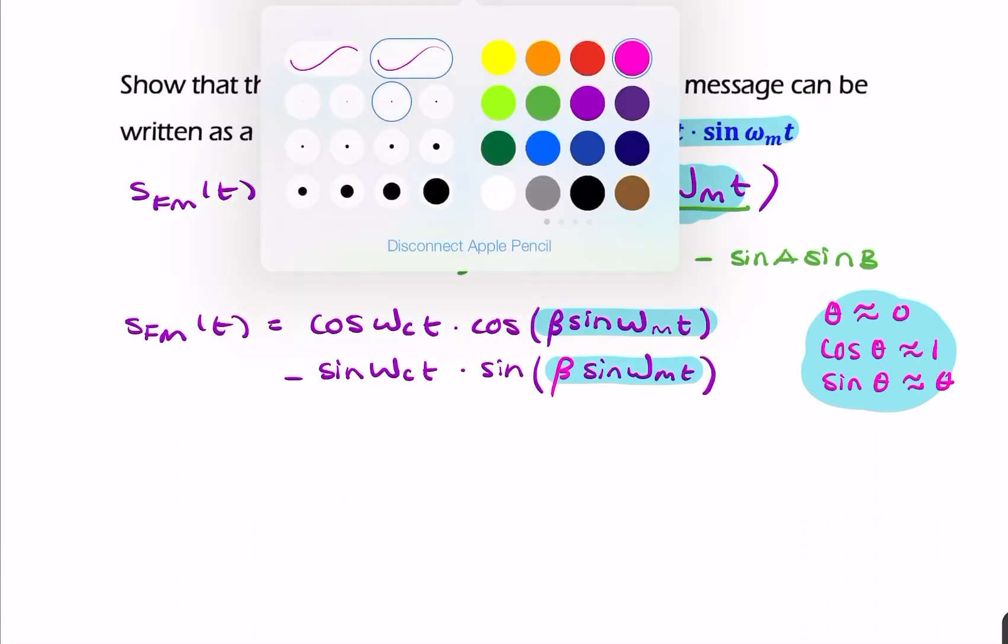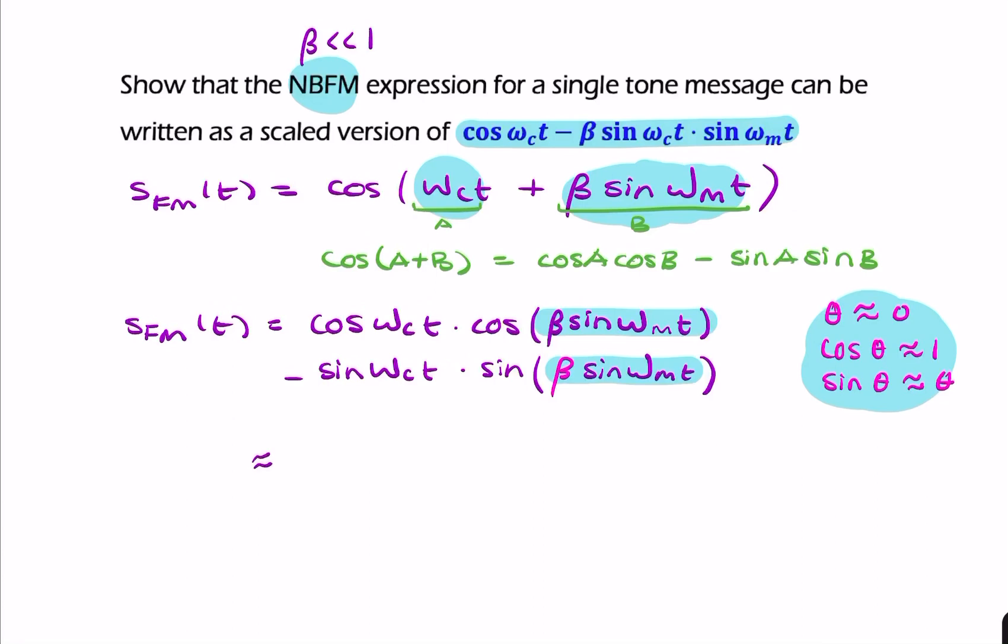Let's write where we're at. This gives me cos ωct times 1 (if I replace the cosine term with 1) minus sin ωct times (replacing sin θ with the argument θ itself, which is β sin ωₘt).